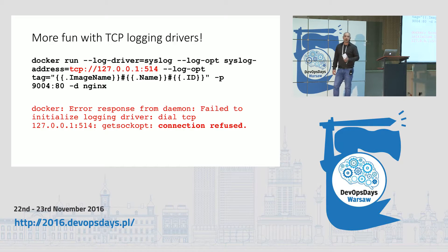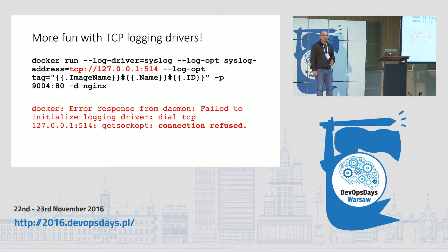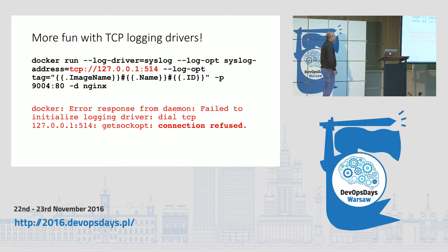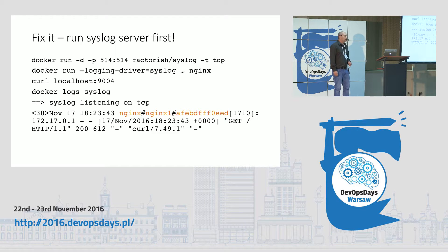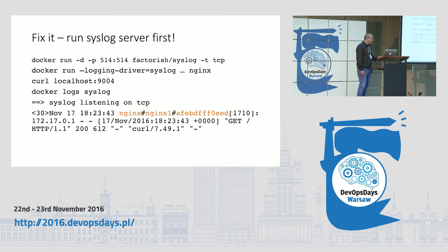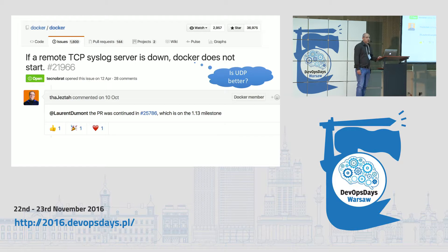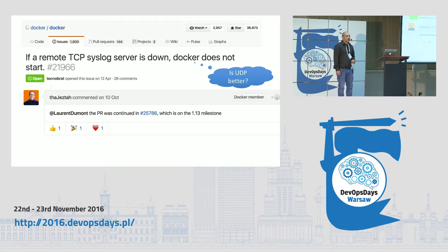Another issue: when you use TCP, your container might not start because the syslog server is not reachable. If something goes wrong in the network, your application won't start up because it can't connect to the syslog server. It's easy to fix — make your syslog server and network connection available — but we know things go wrong. There was an issue in Docker about this, and maybe in the next release they'll fix it so the container can start without a TCP connection to the syslog server. On the other hand, you'd then be in an undefined state where you don't know if your logs are being collected.